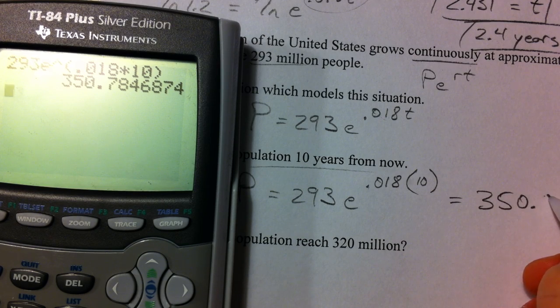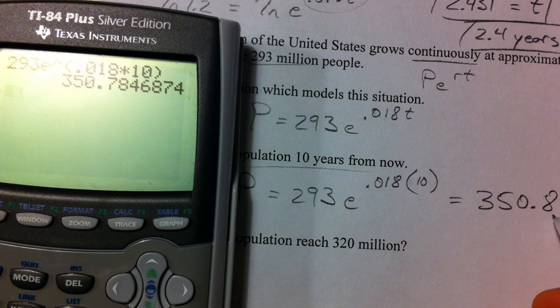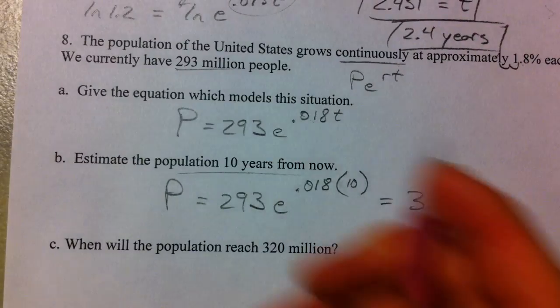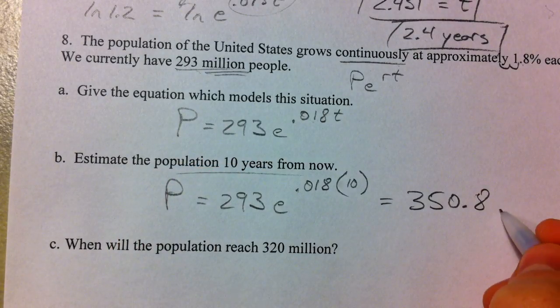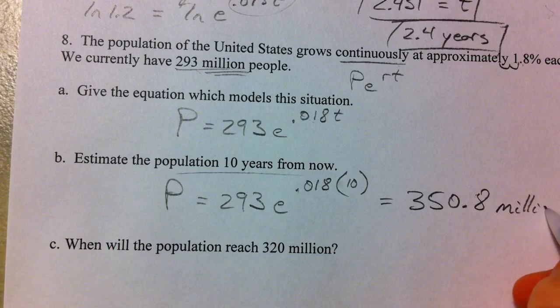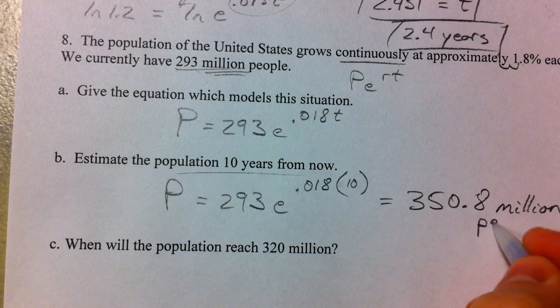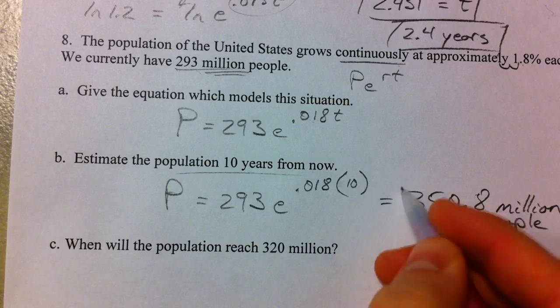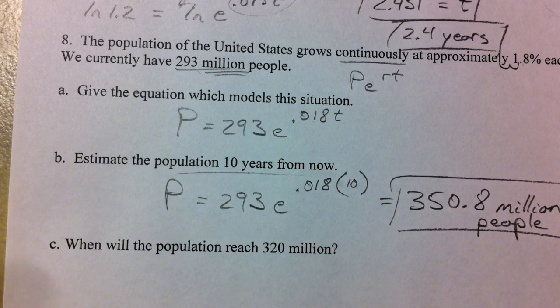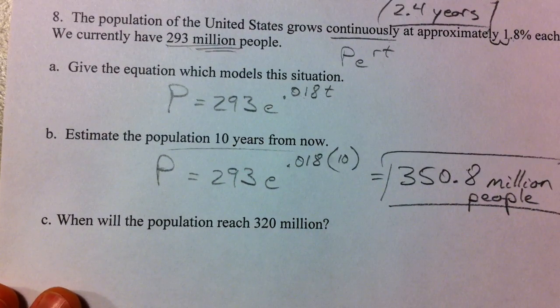So that equals 350 point. I'm going to round it up just to 8. And that's 350.8. That's representing millions of people. 350.8 million people.